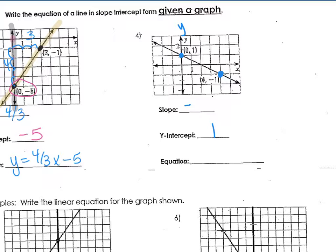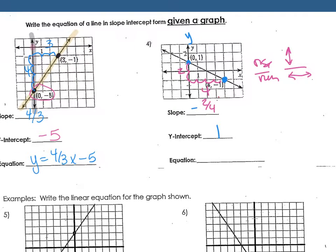So from point to point, my rise over my run, I go down 2 and run 4. It's the same thing. It's your vertical change over your horizontal change. It doesn't matter which way you go, as long as you go up and down first. So negative 2-4ths, can we reduce that down? Negative 1 half.